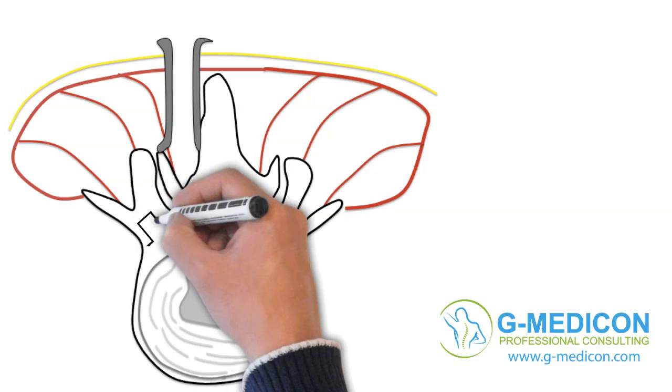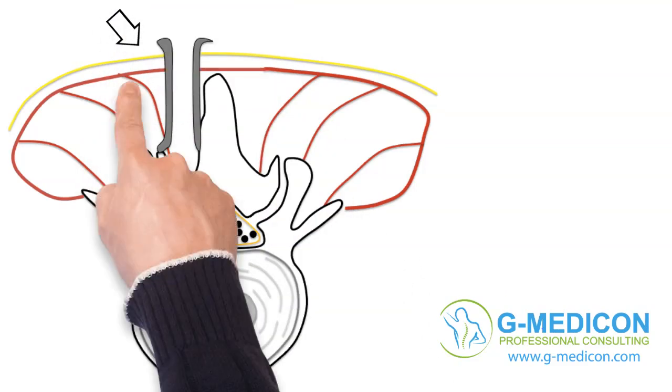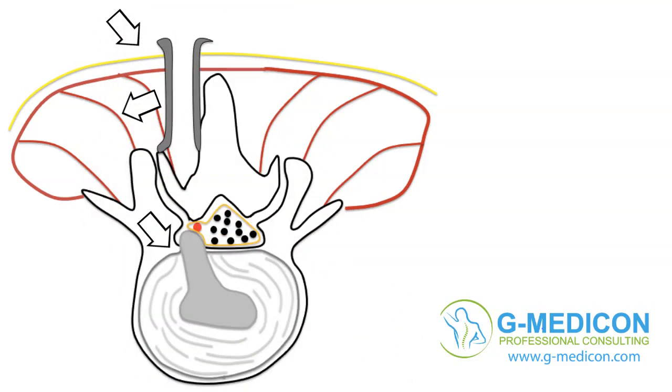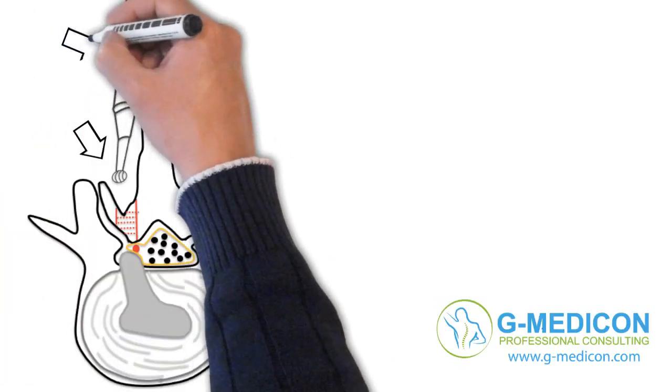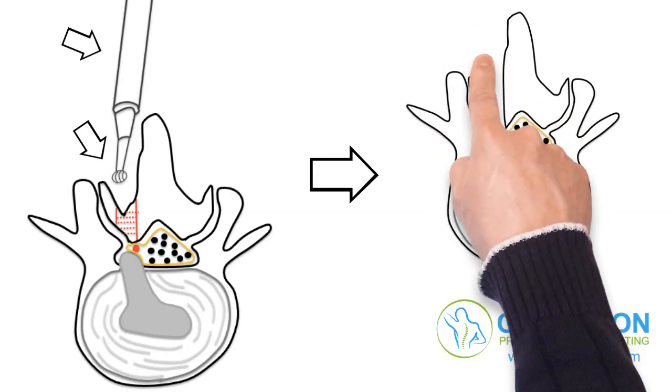To reach the herniated fragment, a skin incision is made and the spinal muscles are retracted to the side. A small part of the vertebral arch is removed using a drill to expose the dura, which is colored yellow here.